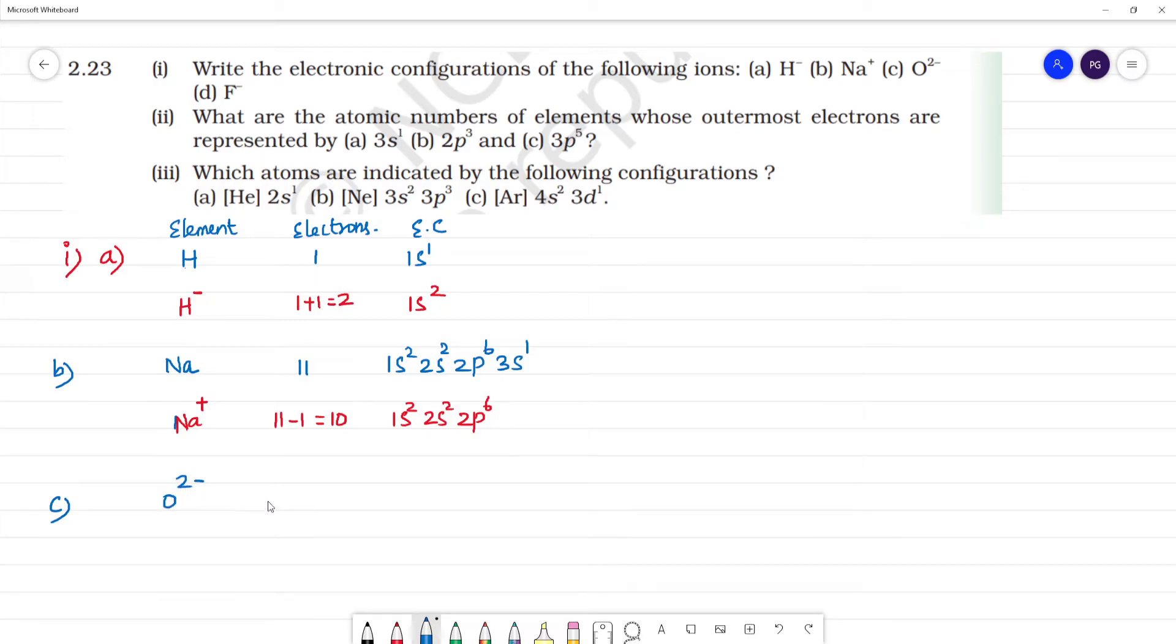Next, O2 minus. Oxygen has atomic number 8, number of electrons 8, electronic configuration 1s2 2s2 2p4. O2 minus means it gained 2 electrons, so 8 plus 2.